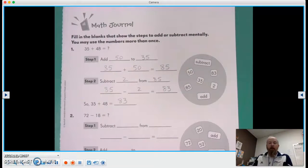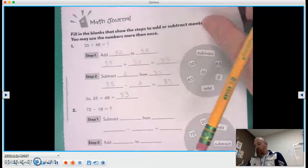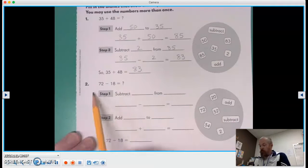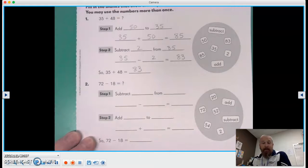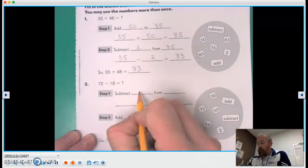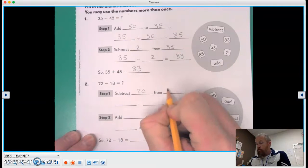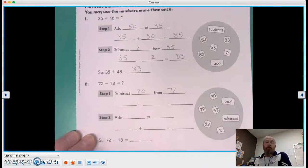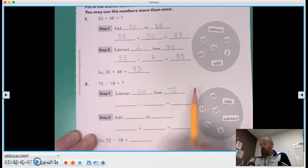Now we're going to go through and do a subtraction problem. So we're gonna take a peek here. We have 72 minus 18. So let's start by subtracting 20 from 72. So what we're gonna look at is 18 is really close to 20, so we're gonna subtract 20 from 72.